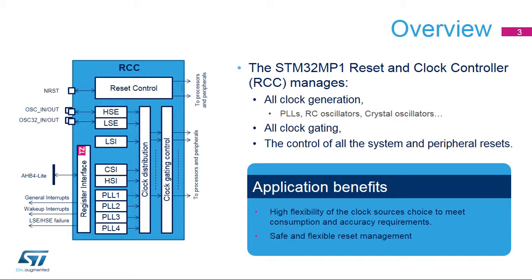The RCC offers several clock sources: three internal RC oscillators, two oscillators using an external crystal or resonator, and four PLLs or phase-locked loops. The clock distribution block uses all those clock sources to provide a flexible set of clocks for peripherals, bus interconnects, and processors. The clock gating control block manages gating of clocks to optimize power consumption. Many peripherals have their own clock, independent from the bus interface clock, allowing the user to dynamically change the bus interface clock without affecting the peripheral interface rate.